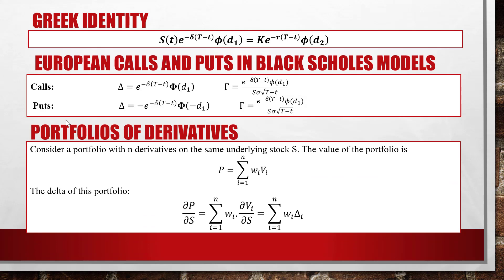For portfolios of derivatives: consider a portfolio with derivatives on the same underlying stock S. The value of the portfolio P equals the summation of w_i times V_i — the weighted sum of the derivative prices, where V_i is the price of the i-th derivative and w_i is its weight. To find the portfolio's Delta, we differentiate P with respect to S. Since w_i is constant with respect to S, differentiating V_i with respect to S gives Delta_i. So the portfolio's Delta is the weighted sum of the individual deltas.